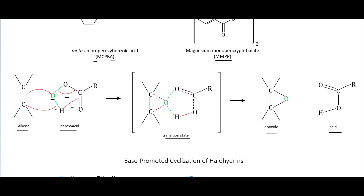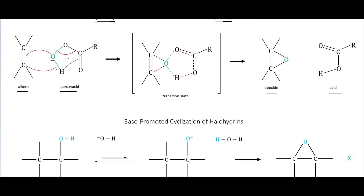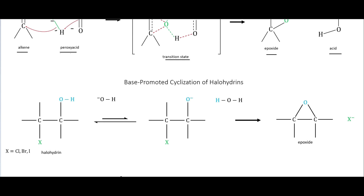That is review from our alcohol videos. Another interesting one is this base-promoted cyclization of halohydrins. We have this halohydrin here, where the halogen can be chlorine, bromine, or iodine, and we have this base here. This will take that hydrogen right there. The electrons go to that oxygen, and we end up with this. Then this oxygen can actually attack that carbon right there, this halogen leaves, and we end up with this epoxide right here. And this has now become water.